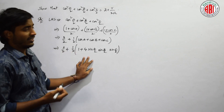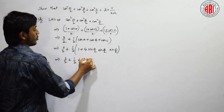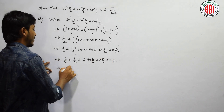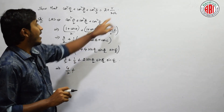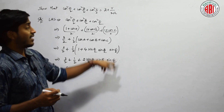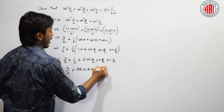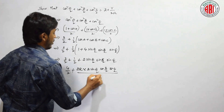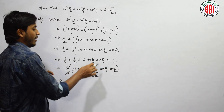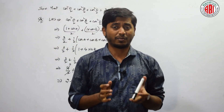Substituting: we get 3/2 + (1/2)[1 + 4·sin(A/2)·sin(B/2)·sin(C/2)]. That is 3/2 + 1/2 + 2·sin(A/2)·sin(B/2)·sin(C/2) = 2 + 2·sin(A/2)·sin(B/2)·sin(C/2). Now, 4R·sin(A/2)·sin(B/2)·sin(C/2) = r, so 2·sin(A/2)·sin(B/2)·sin(C/2) = r/(2R). Therefore the result is 2 + r/(2R).